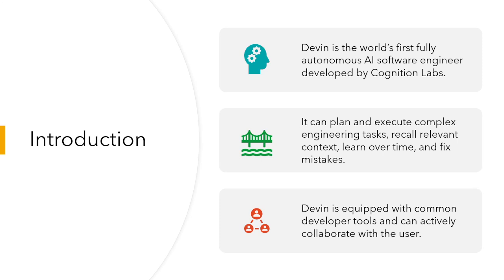When I say software engineer, it is doing a lot more than we expect from a tool. It is not a tool — it is a technology. It can plan and execute complex engineering tasks using relevant context, learn over time, and fix mistakes on its own. Devin is equipped with common developer tools and can actively collaborate with users. It can work like a team member.